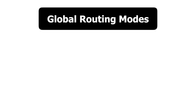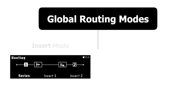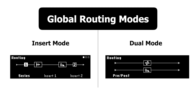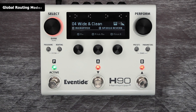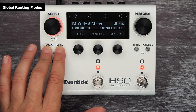The H90 offers two global routing modes: insert or dual mode. Insert mode gives us the ability to run two algorithms in series or parallel with up to two mono insert loops or one stereo. Dual mode, on the other hand, allows us to work with two independent signal paths at once — we can process two mono or stereo instruments at once, but unlike insert mode, in dual mode we cannot use any insert loops.